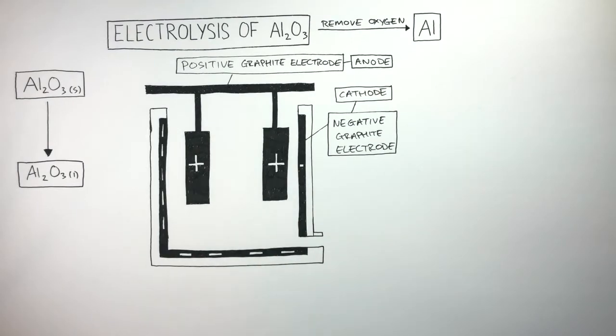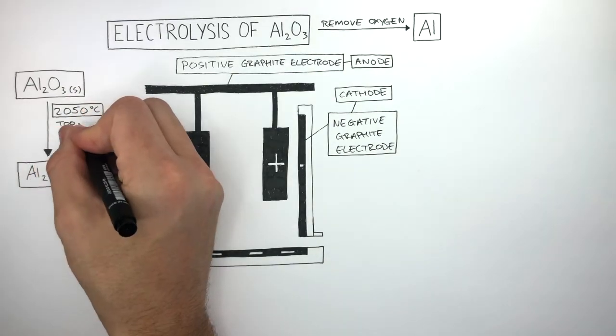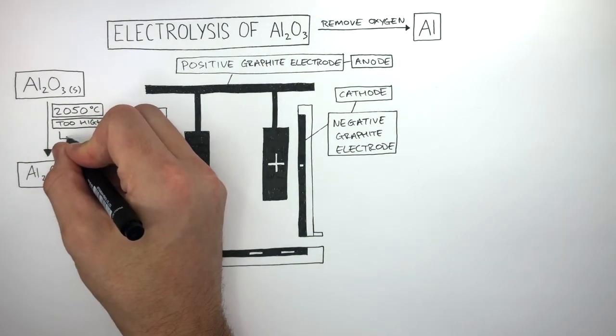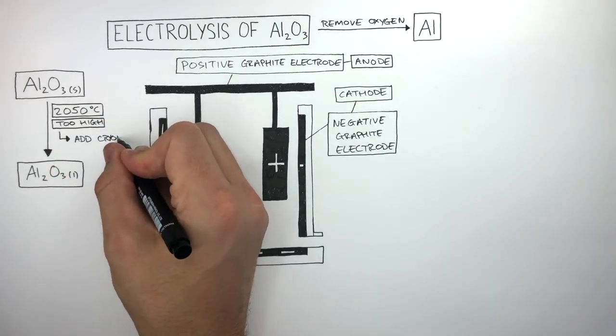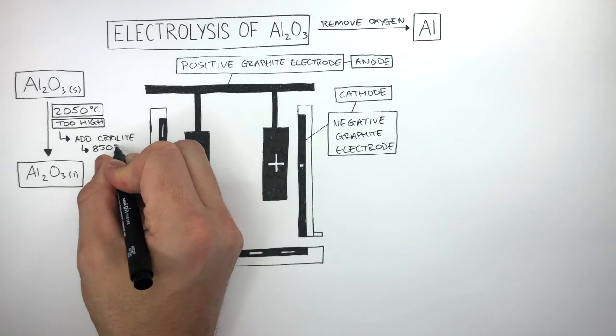Due to the very strong ionic bonds between ions, the melting point of Aluminium Oxide is very high. It is 2,050 degrees Celsius. This is too high to carry out for any company, as they do not make enough money due to the amount of heat and electricity needed to melt the ionic compound. To lower the melting point, they add cryolite, and this lowers the melting point to 850 degrees Celsius.